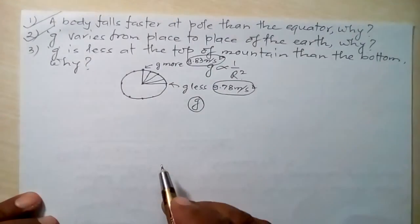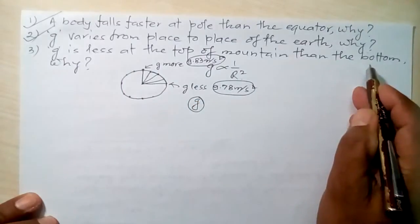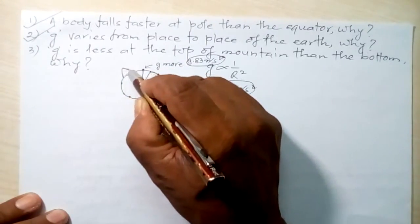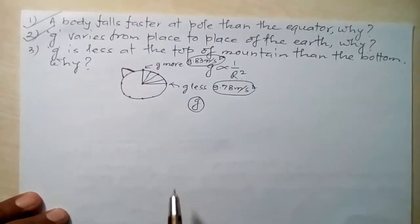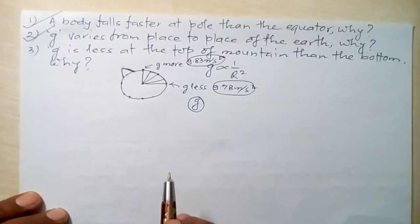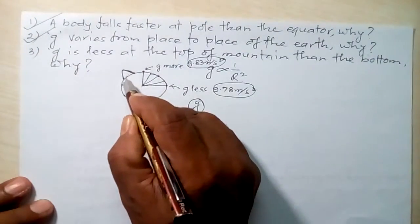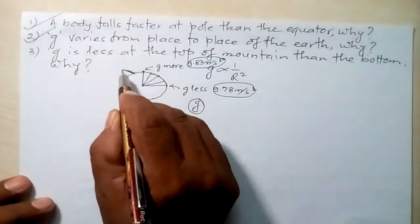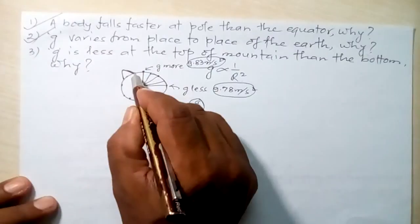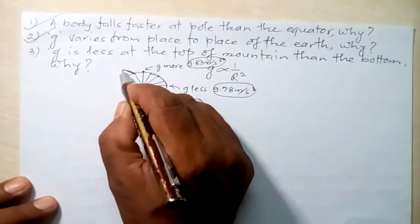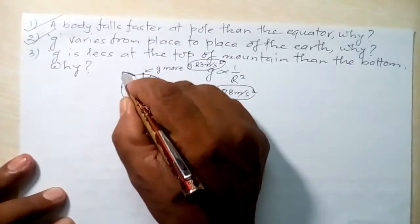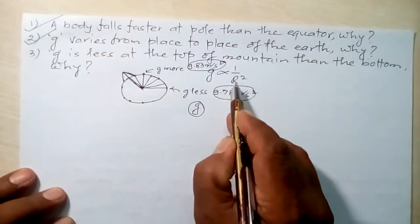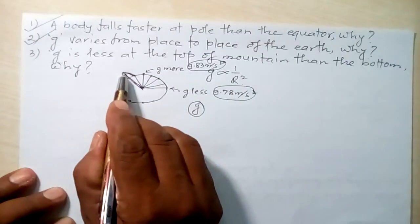Now the next question: g is less at the top of a mountain than at the bottom — why? Consider a mountain on the Earth's surface. The radius of the Earth at the bottom of the mountain is less, but the radius of the Earth at the top of the mountain is more. Since g is inversely proportional to the square of the radius of the Earth, and the radius is more at the top, g will be less at the top.